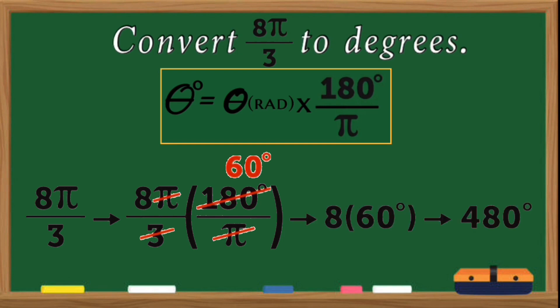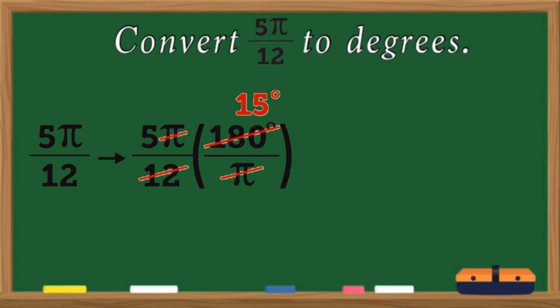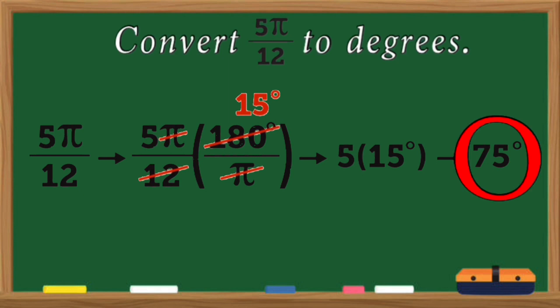8 times 60 is equal to 480 degrees. Therefore, 8 pi over 3 is equal to 480 degrees. Let us have another example — given here is 5 pi over 12. To convert it to degrees, multiply 5 pi over 12 by 180 degrees over pi. Pi divided by pi is 1, so cancel them out, and 180 divided by 12 is equal to 15. What is left is 5 times 15 degrees, which is equal to 75 degrees. Therefore, 5 pi over 12 is equal to 75 degrees.